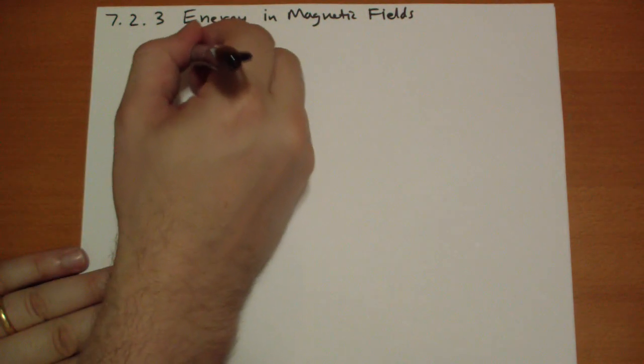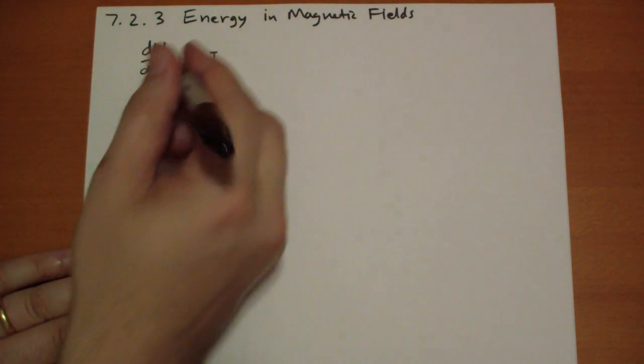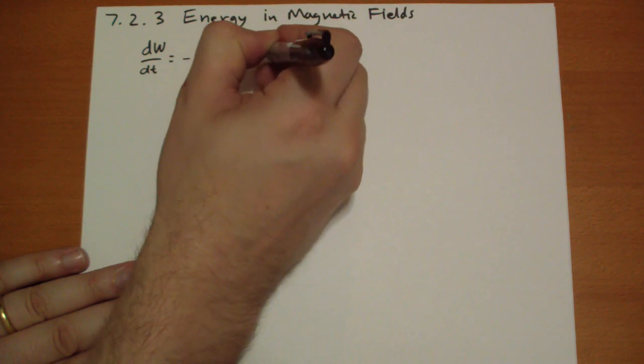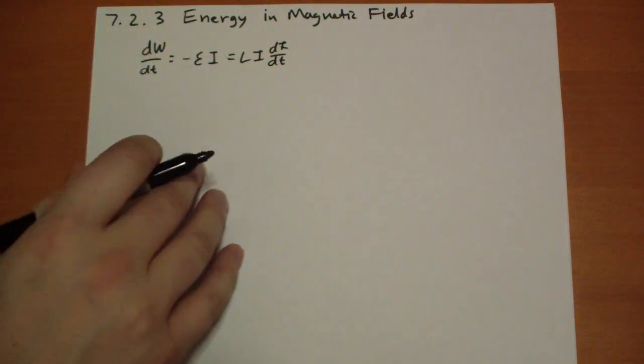Our work is going to be equal to negative epsilon, the EMF, times the current, and the EMF is just LdI over dt, so it's LI dI over dt.